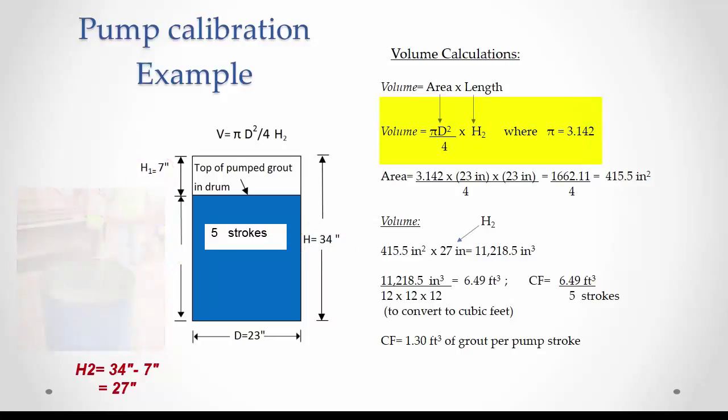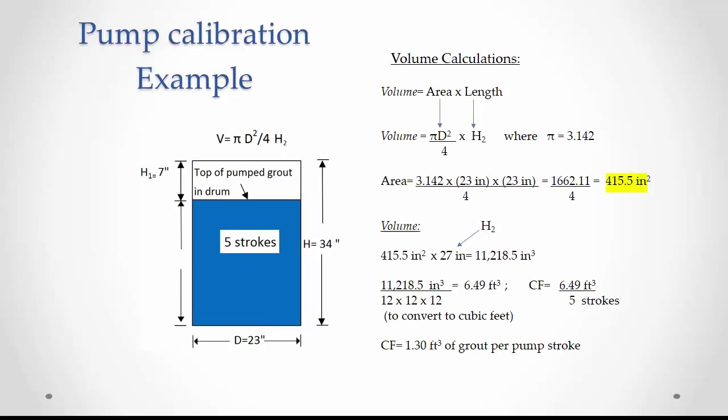With these dimensions, he can compute the volume that was grouted. Volume equals the area of the circle times H₂. The area of the circle is 3.142 times 23 squared divided by 4, which equals 415.5 square inches.